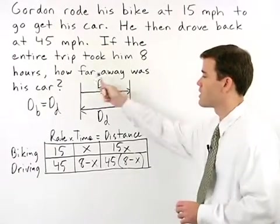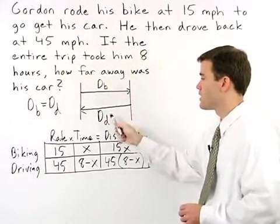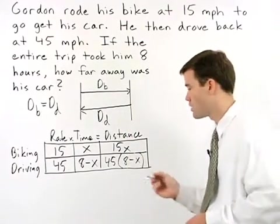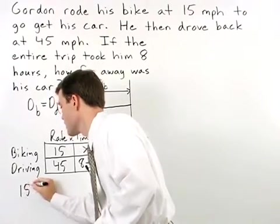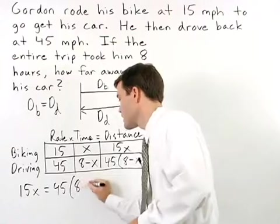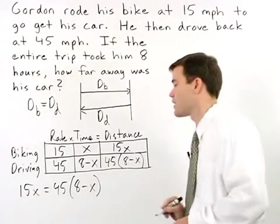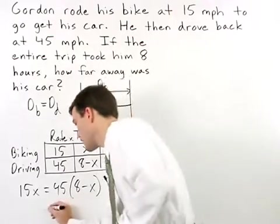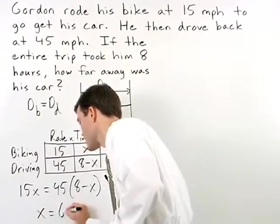Remember from our diagram that the two distances are equal. So our equation reads, 15x equals 45 times parenthesis 8 minus x. Solving from here, we get x equals 6.